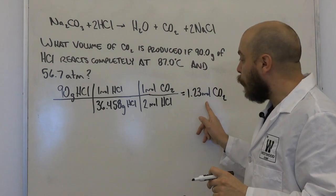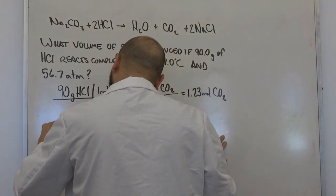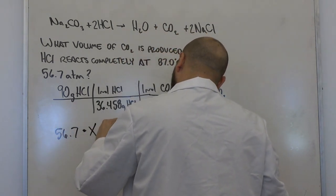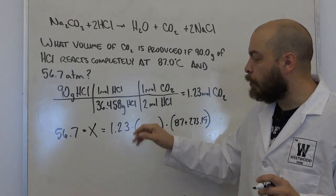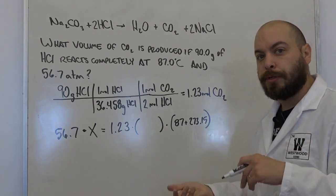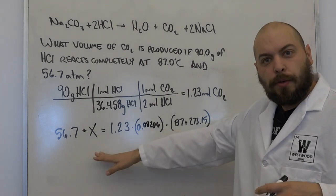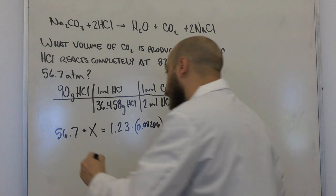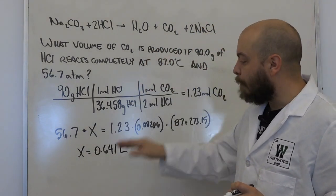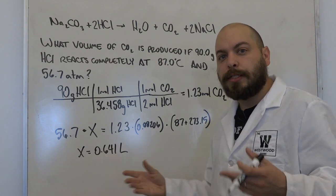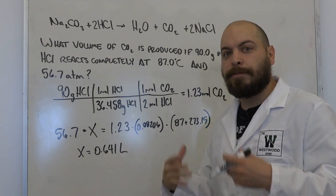Now we have moles, and we also have temperature and pressure, which means we can plug into our ideal gas law. We pick the correct R — in this case, atmospheres, so R = 0.08206 — and when solving for X, we end up with a volume of 0.641 liters. That means in the course of this reaction, we've produced 0.641 liters of carbon dioxide gas. This is an example where we use stoichiometry first and then apply that moles value to the ideal gas law to find the volume of a product.